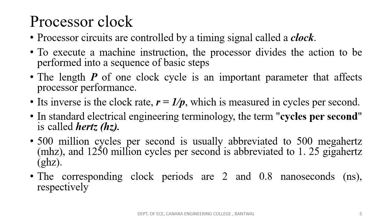The corresponding clock periods are 2 nanoseconds and 0.8 nanoseconds. Clock period means the time required to execute one basic step. If the clock speed is 500 megahertz, it will take 2 nanoseconds to execute one basic step; if it is 1.25 gigahertz, it will take 0.8 nanoseconds. The more clock cycles per second, the more instructions get executed, and the lesser the period required to execute a basic step. Lower clock frequency means larger time to execute code; larger clock frequency means lesser time to execute the code.